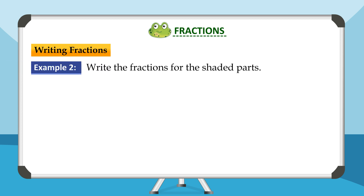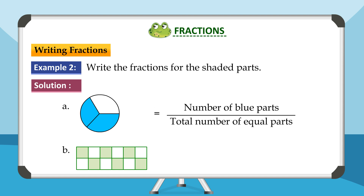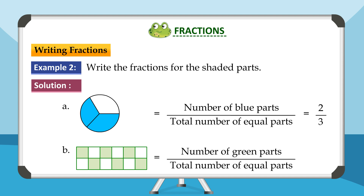Example two: Write the fractions for the shaded parts. Solution A: Number of blue parts upon total number of equal parts is equal to two upon three. B: Number of green parts upon total number of equal parts is equal to six upon twelve.